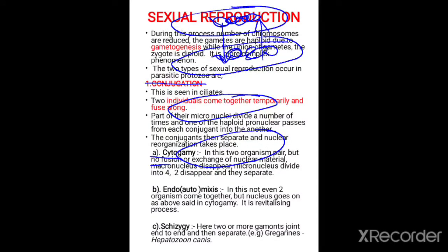What simply happens is the macronuclei present in the individual protozoans divide to form pronuclei, and these pronuclei fuse to form the nucleus, then they separate again. This is cytogamy. It differs from conjugation in that there is no exchange or fusion of nuclear material.